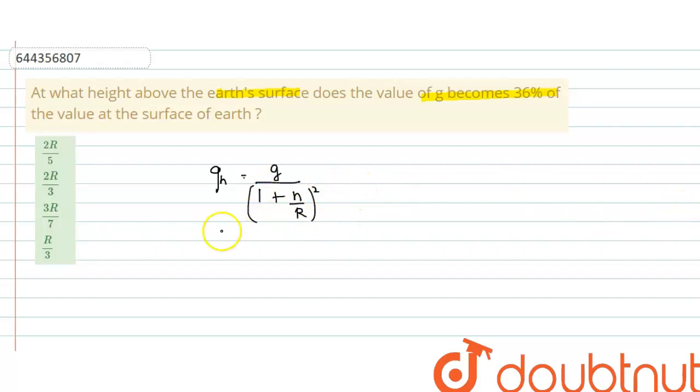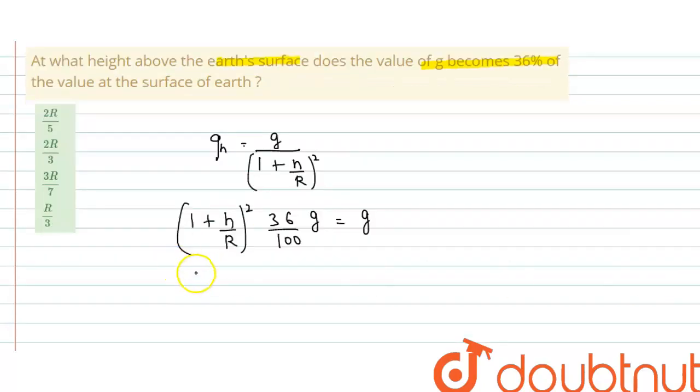This equals 1 plus h upon r whole square into g. At height h, g is 36% of g. That means 36 upon 100 g equals g. So from here we can write (1 plus h upon r) whole square equals 100 upon 36.